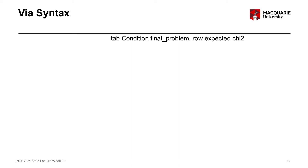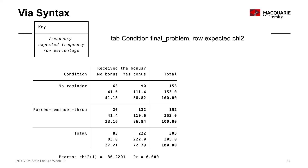If we want to do the same thing through syntax, we use the tab or tabulate command, specify the independent variable and then the dependent variable. The options comma row and expected give us those extra pieces of information in the frequency table itself. The important option is chi2, which tells Stata to give us the chi-square test statistic and its associated p-value.